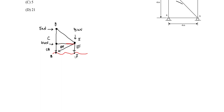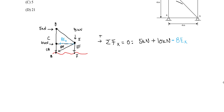Taking ΣFx = 0, because BE would be the only unknown with an X component. Going to the right is positive. The 5 kilonewtons is positive, the 10 kilonewtons is also positive. For BE, it has an X component — BEₓ — and BEₓ is going to the left, so it's minus BEₓ. This must equal zero. So 5 + 10 = 15 kilonewtons. Now for BEₓ, I do the triangle geometry using SOHCAHTOA. I'll call this angle here — and we know it's going to be 45 degrees.